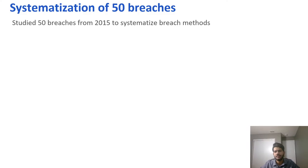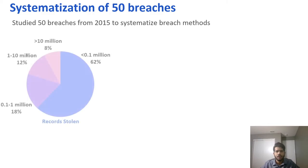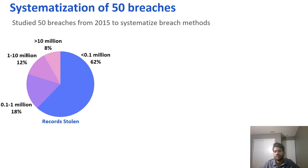While the 10 case studies contain detailed step-by-step workflows, in order to systematize breach methods, it is important to understand if these case studies paint a comprehensive picture. For this purpose, we studied 50 data breaches from 2015. This chart shows the number of records stolen: for 62% of cases, fewer than 0.1 million records were stolen, meaning attackers mostly targeted small or medium-sized businesses. For just 8% of cases, the number of records exceeded 10 million.